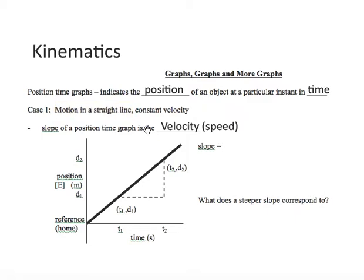The slope of a position-time graph is the velocity, or the speed. Why is that? Recall that slope is rise over run.